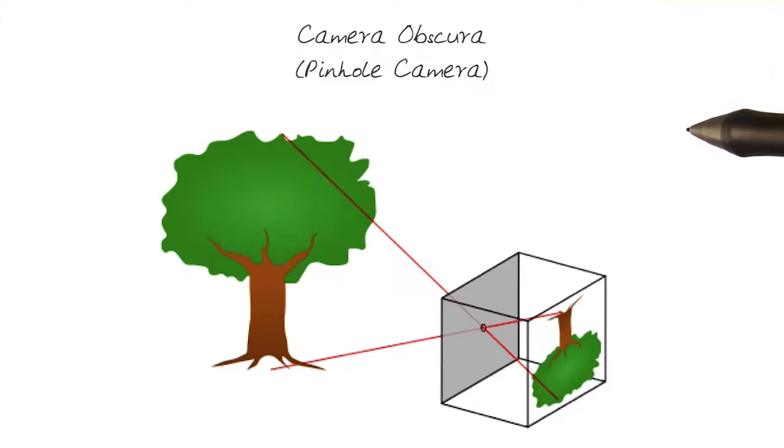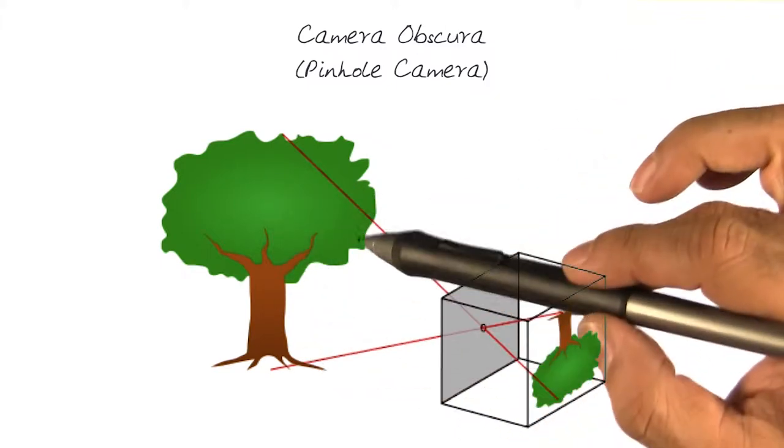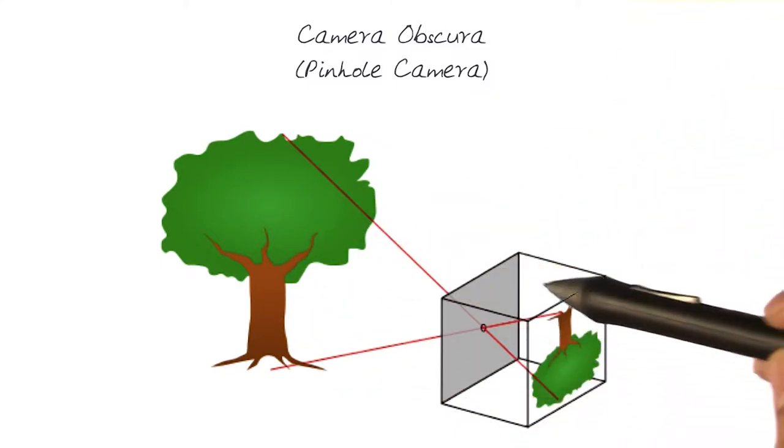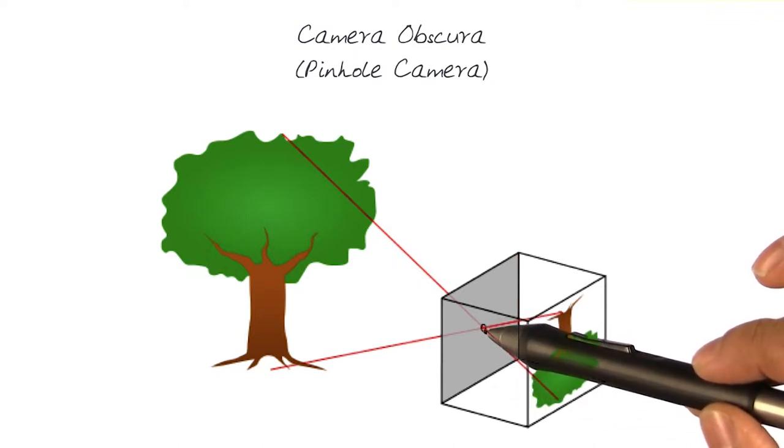This is the basic definition of a pinhole camera or camera obscura. The basic idea is that if you have a 3D scene and you can create a small device which has a small hole, a pinhole,